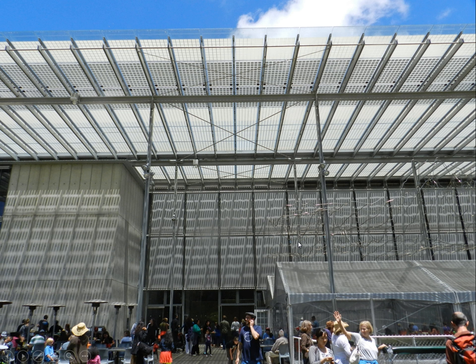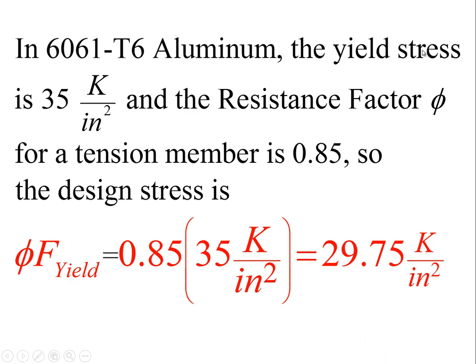This entire structure up here is probably aluminum that's been anodized, or it could be stainless steel. The rods could be aluminum or stainless steel. The sizing procedure will be the same because the yield stress for structural aluminum and the stainless steel grades we use is the same: 35 kips per square inch. For the moment, let's assume the rods are aluminum. For 6061-T6 aluminum, the yield stress is 35 kips per square inch and the resistance factor is 0.85, so the design stress is φ × Fy = 0.85 × 35 ksi = 29.75 kips per square inch.